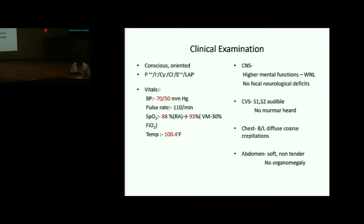On clinical examination, he was conscious and oriented, with severe pallor and edema. BP was 75/50, pulse rate 110, SpO2 at room air 88%, improving to 93% on Venturi mask at FiO2 30%. He was febrile. CNS: higher mental functions normal, no focal neurological deficits. CVS: S1, S2 audible. Chest: bilateral diffuse coarse crepitations. Abdomen: soft, non-tender, no organomegaly.